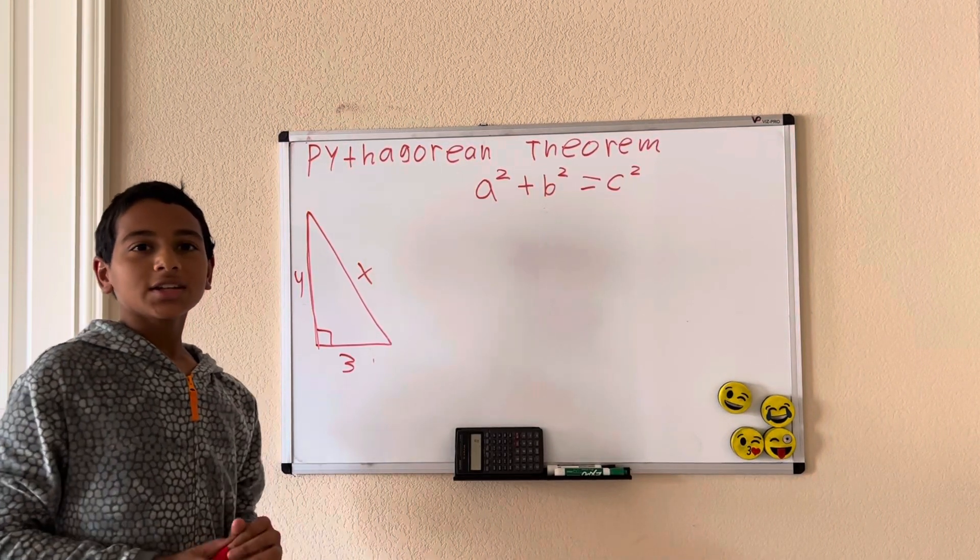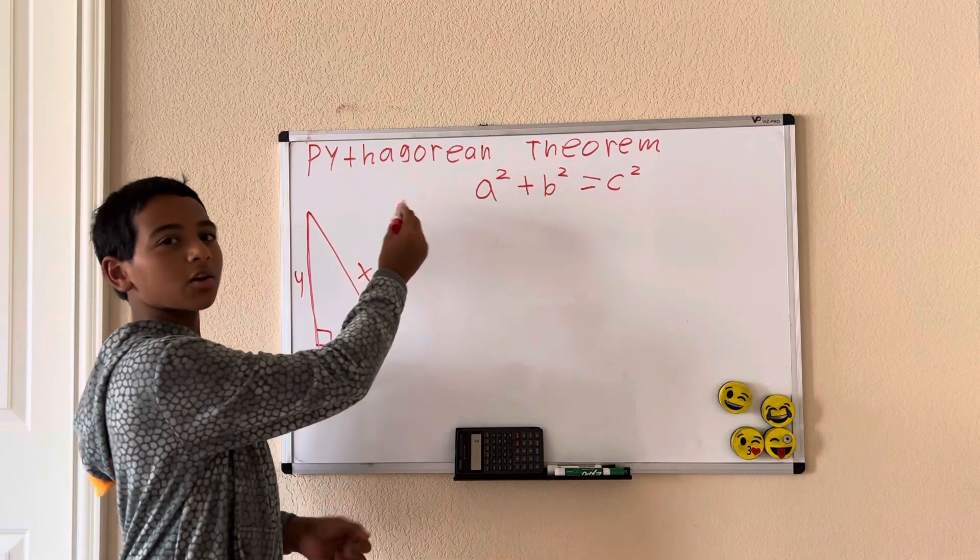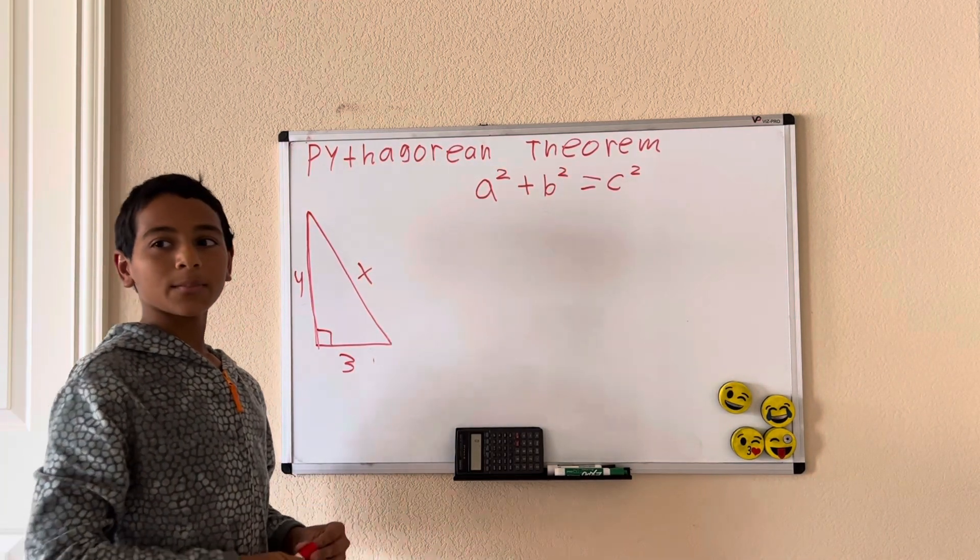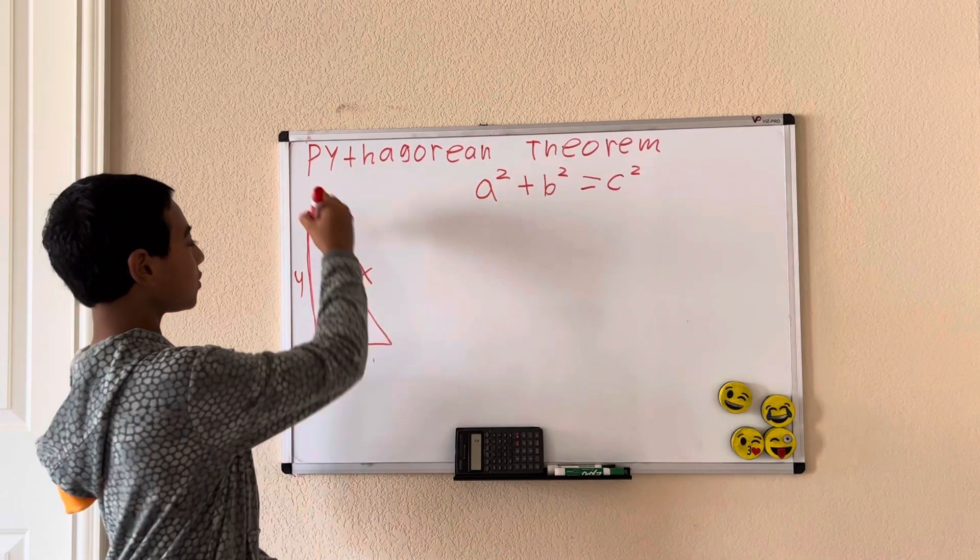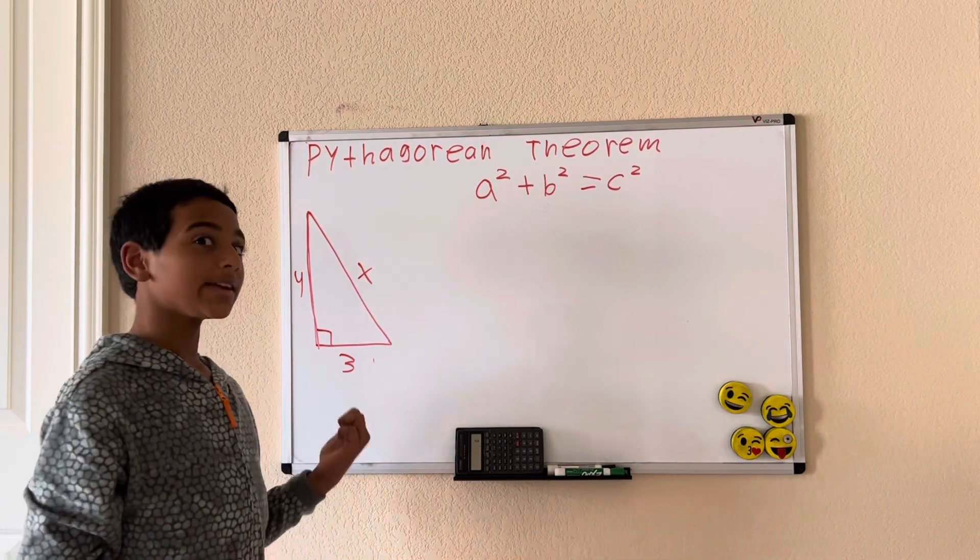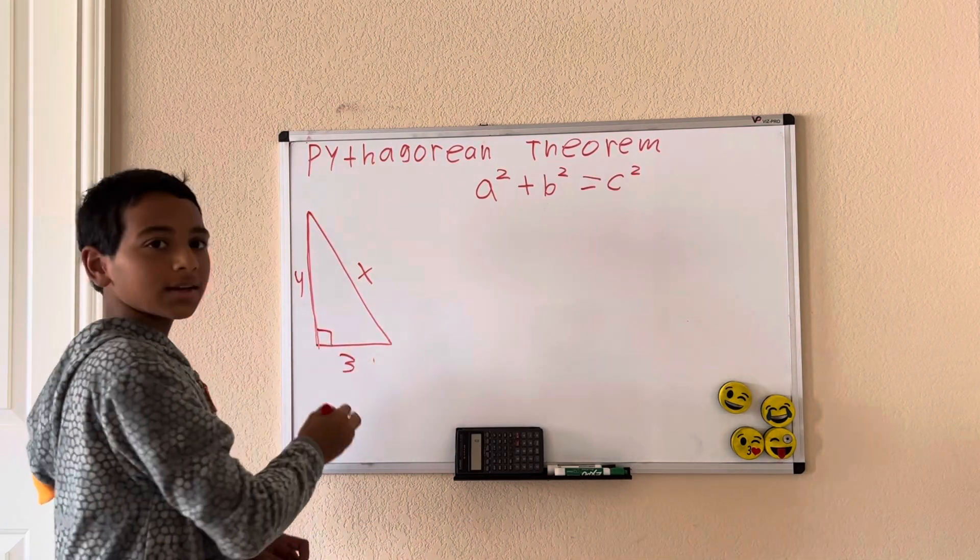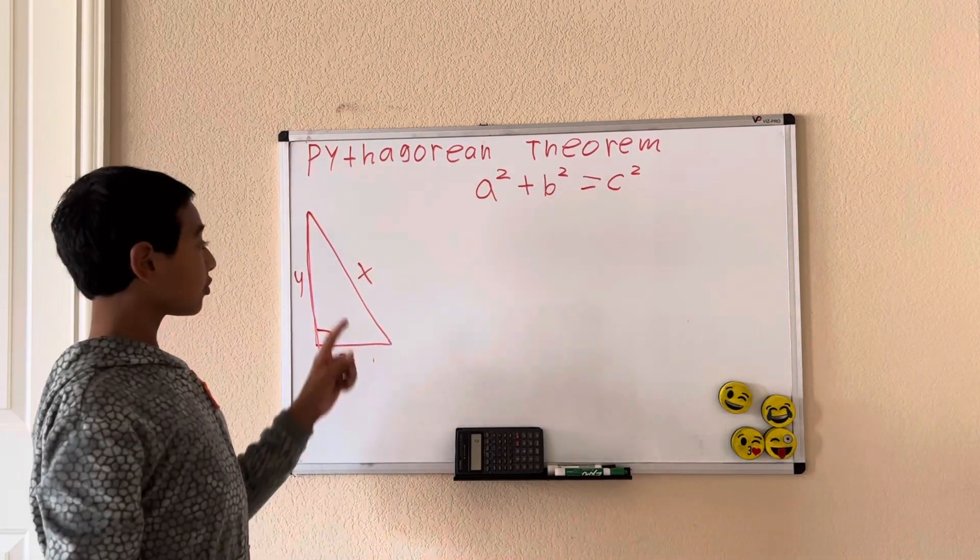Welcome back to my channel. Today we're doing the Pythagorean theorem. This will help us remember the hypotenuse, or the longest side in a right triangle. Here we have the lengths 4, 3, and X. We have to find the value of X.